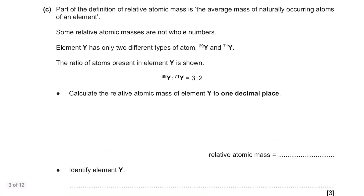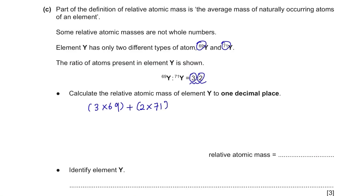Part c. Part of the definition of relative atomic mass is the average mass of naturally occurring atoms of an element, which is why some relative atomic masses are not whole numbers. Element Y has only two types of atom: Y₆₉ and Y₇₁, in a ratio of 3 to 2. To calculate the relative atomic mass, multiply each ratio value by the mass of each atom type: (3 × 69) + (2 × 71), then divide by the total ratio sum of 5. The answer is 69.8.